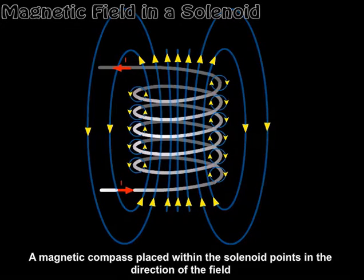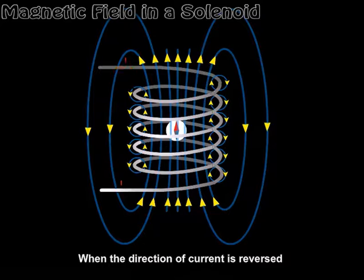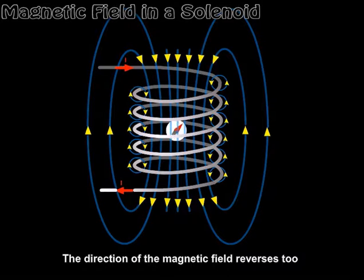A magnetic compass placed within the solenoid points in the direction of the field. When the direction of the current is reversed, the direction of the magnetic field reverses too.